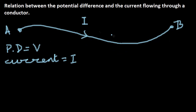So if the potential difference rises — or as we say, if the voltage rises — then the current also rises. The relation between potential difference and current is that if potential difference increases, current also increases. Mathematically, we can put it this way: the potential difference is directly proportional to the current.